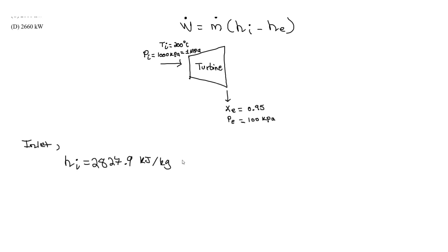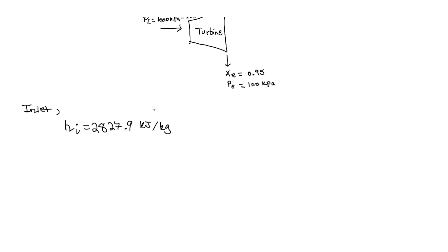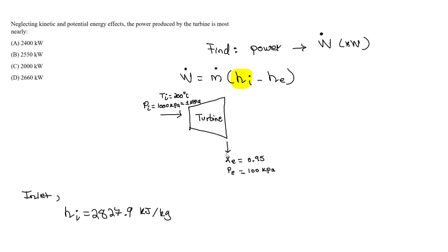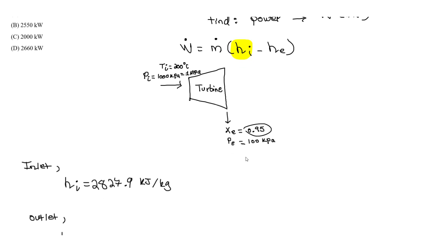Now let's find the enthalpy at the outlet, H-sub-E. Since we have a quality of 0.95 at the exit, it's a two-phase saturated mixture. To find the enthalpy of the mix, we use the equation from the handbook: H-exit equals H-sub-F plus X times H-sub-FG.